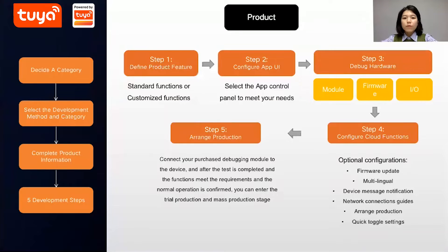As for products, Tuya is empowering more than 1,100 product categories, covering Smart Electrical, Smart Lighting, Smart Security, Smart Sensor, Smart Home Appliance, and more.